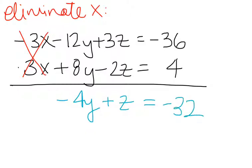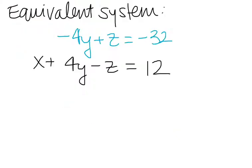So now I set up an equivalent system like I did before. So here I have this equivalent system where I replaced one of my equations with the new equation, minus 4y plus z equals negative 32. And I have one of my original equations, x plus 4y minus z equals 12.